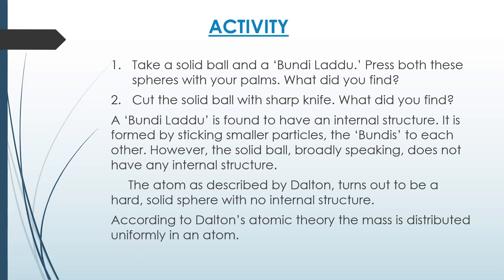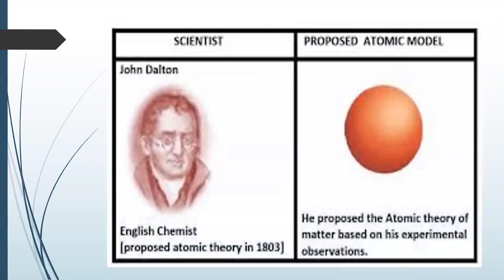The atom as described by Dalton turns out to be a hard solid sphere with no internal structure. According to Dalton's Atomic Theory, the mass is distributed uniformly in an atom. This image shows the great scientist John Dalton, who was an English chemist, proposed atomic theory in 1803, and his proposed atomic model.